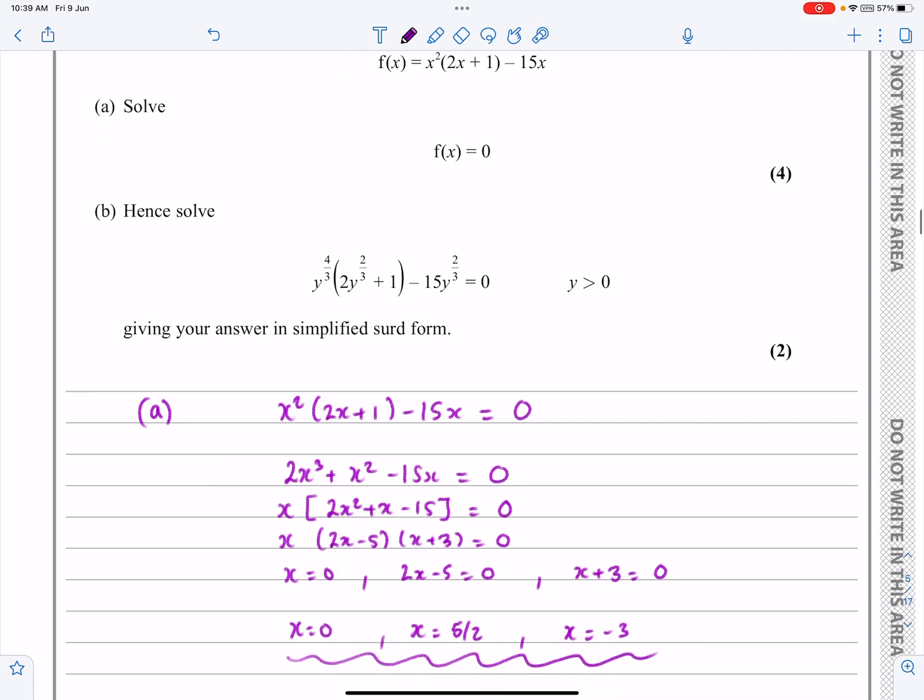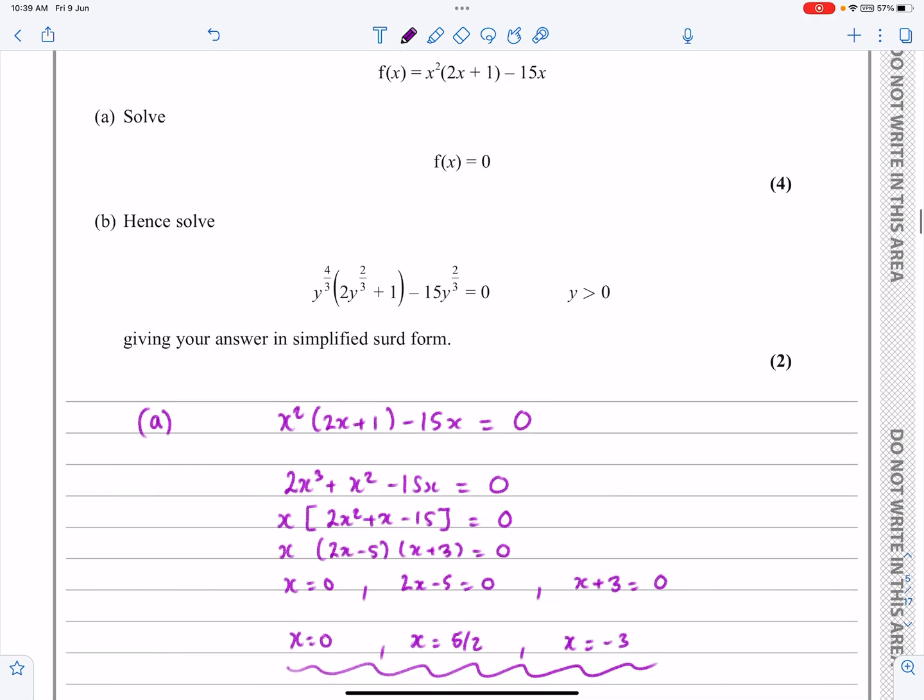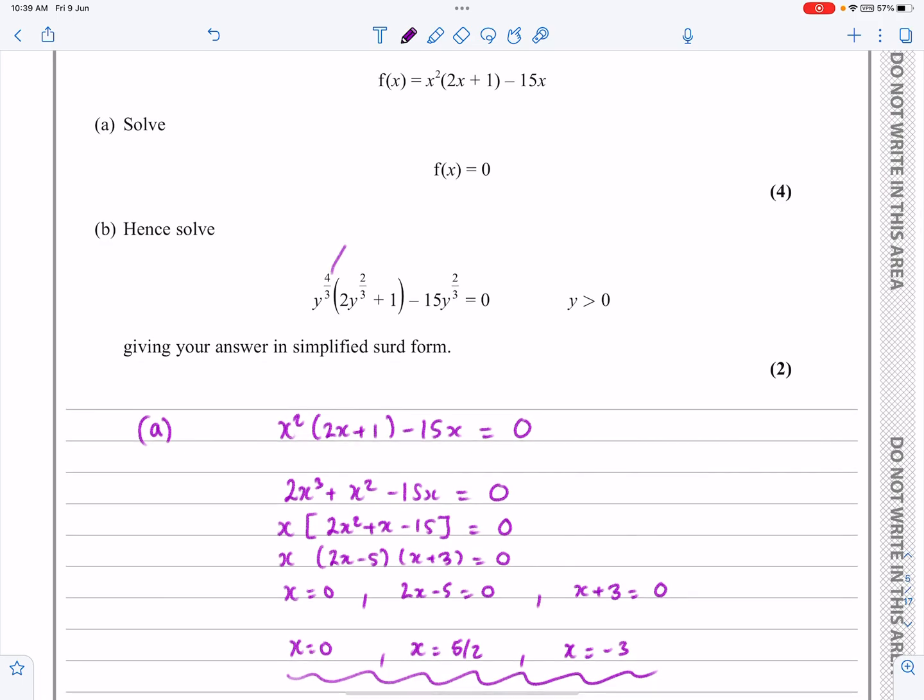Part B then says, okay, once you've done that, the 'hence' gives me the clue that I'm going to be using part A to do part B. So let's have a quick comparison of this equation. We can see that it's in exactly the same format here, where I've got x², they've got y^(4/3). 2x, they've got y^(2/3). They've both got +1 and 15x, 15y^(2/3).